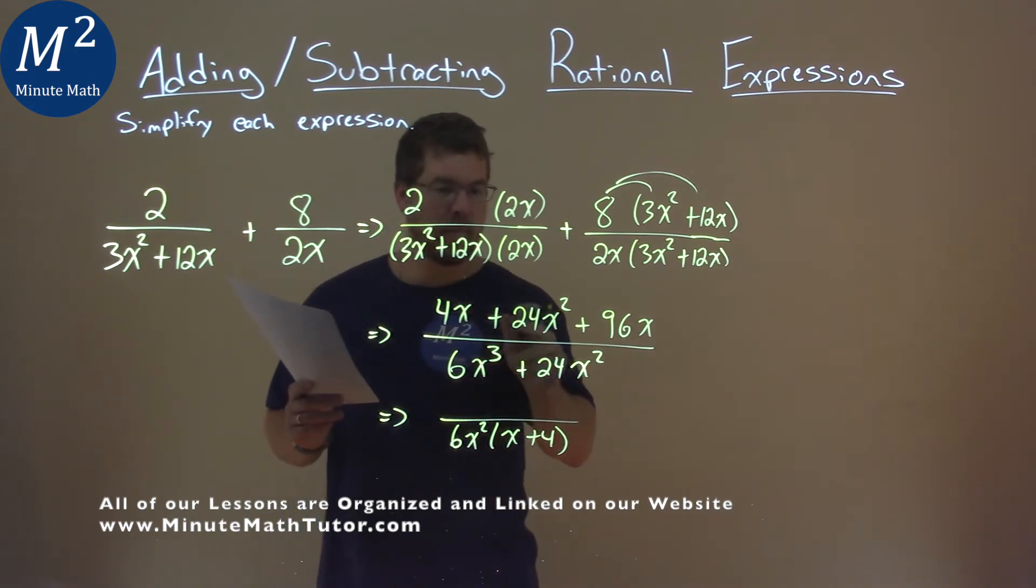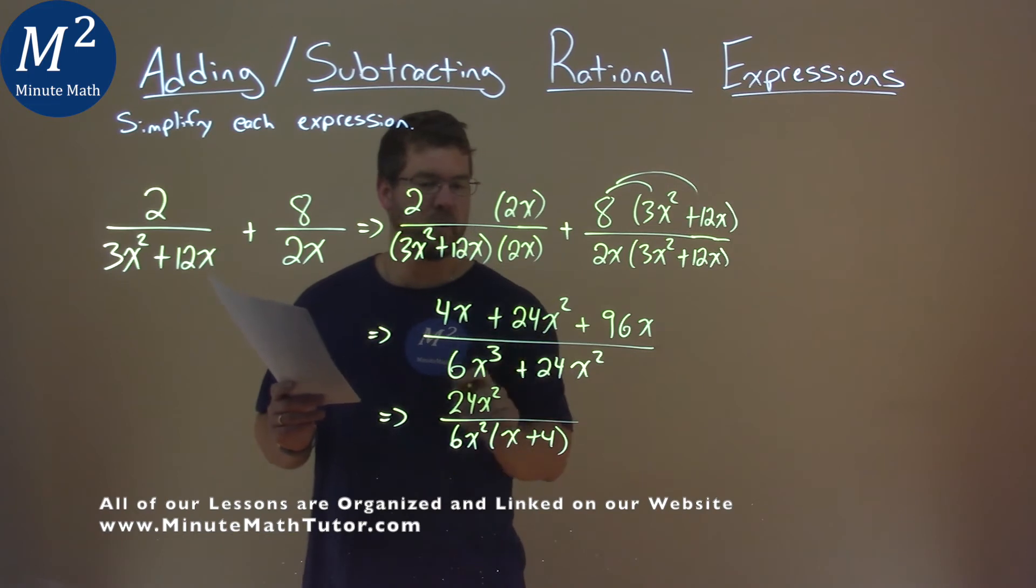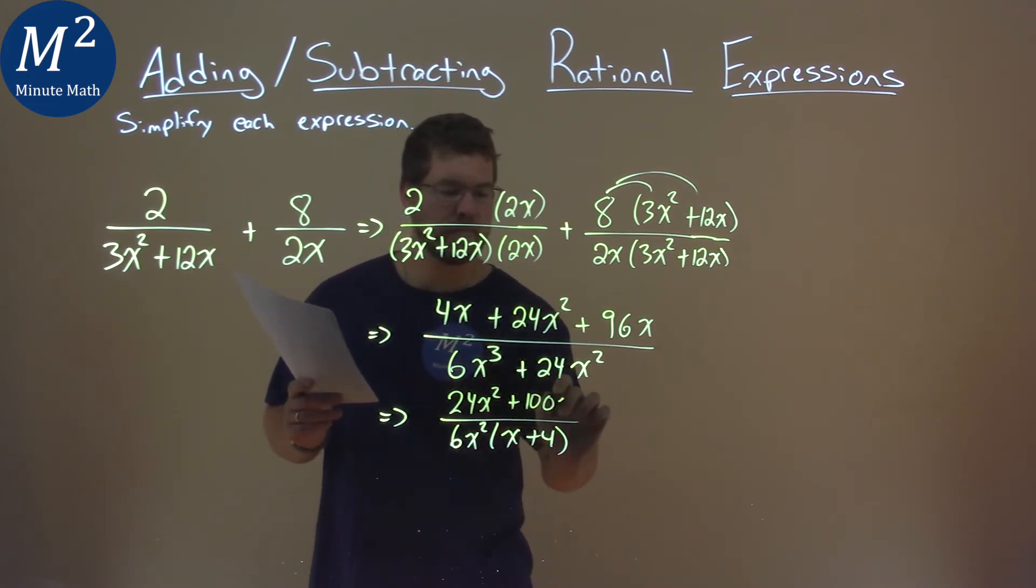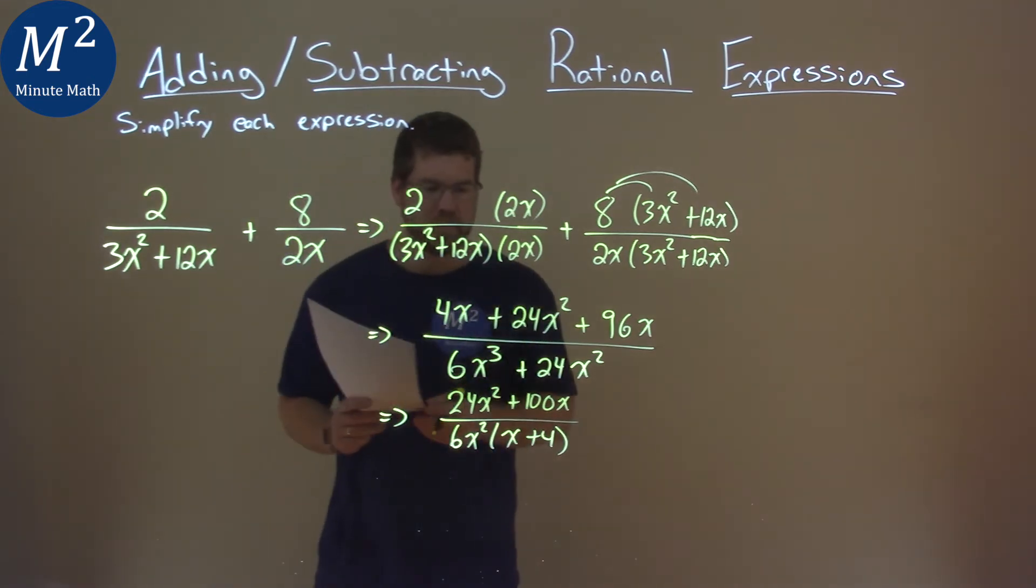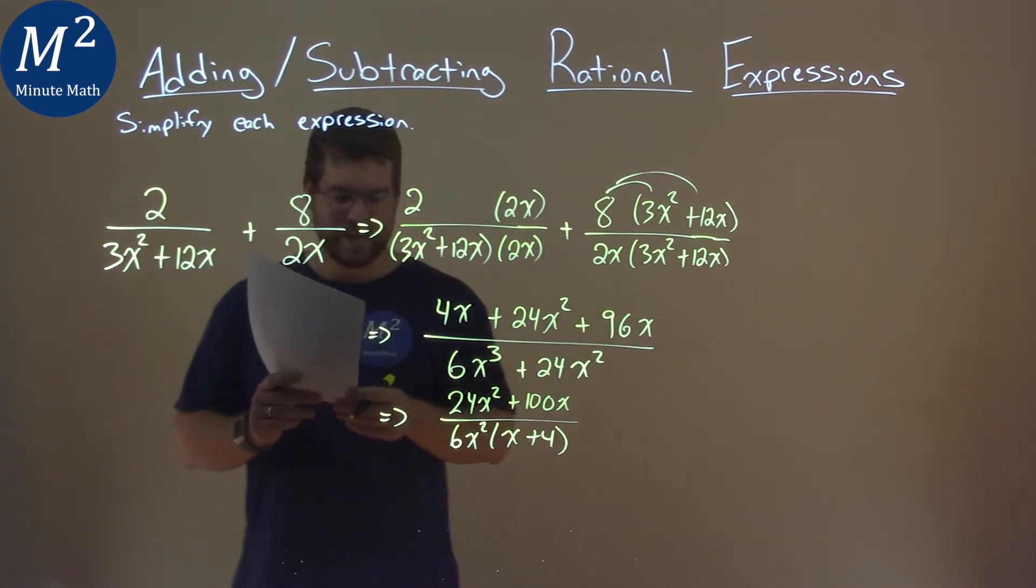The numerator, I want to combine my like terms and rearrange. So the 24x squared is the only x squared term, but the 4x and the 96x gives me 100x. Can I pull out anything in the numerator? Yes, I can.